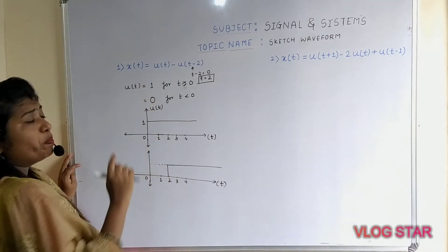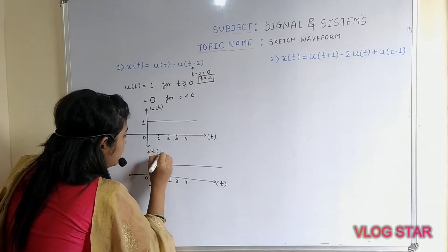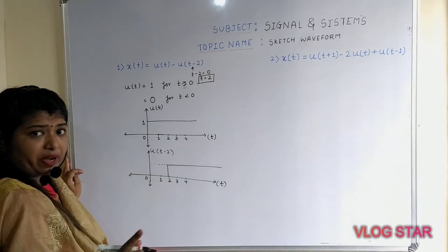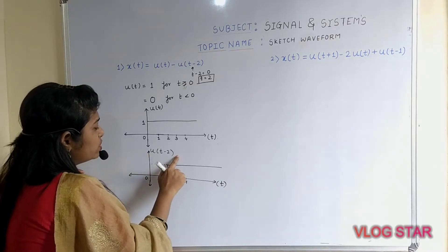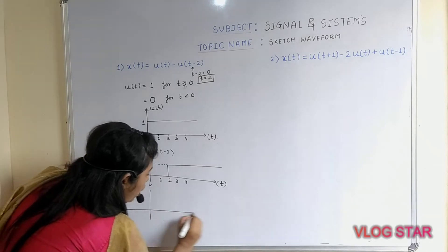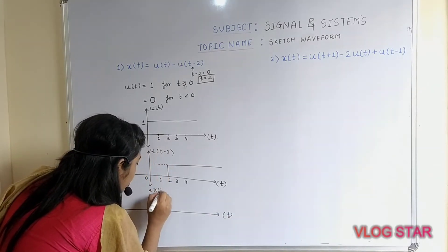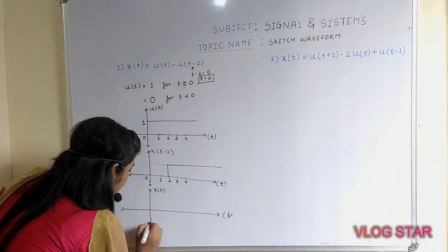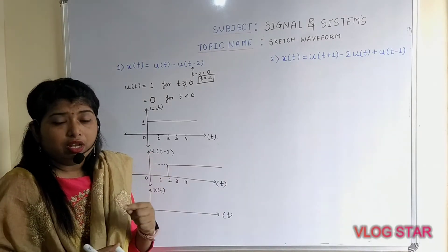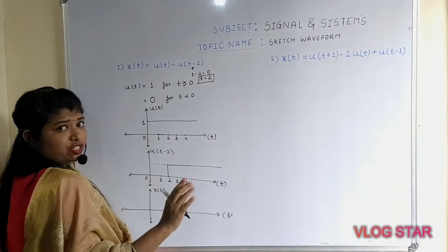Then you have to perform the subtraction between the two signals — subtract u(t − 2) from u(t) — to get the final signal x(t). Now you have to perform the subtraction and consider the range.